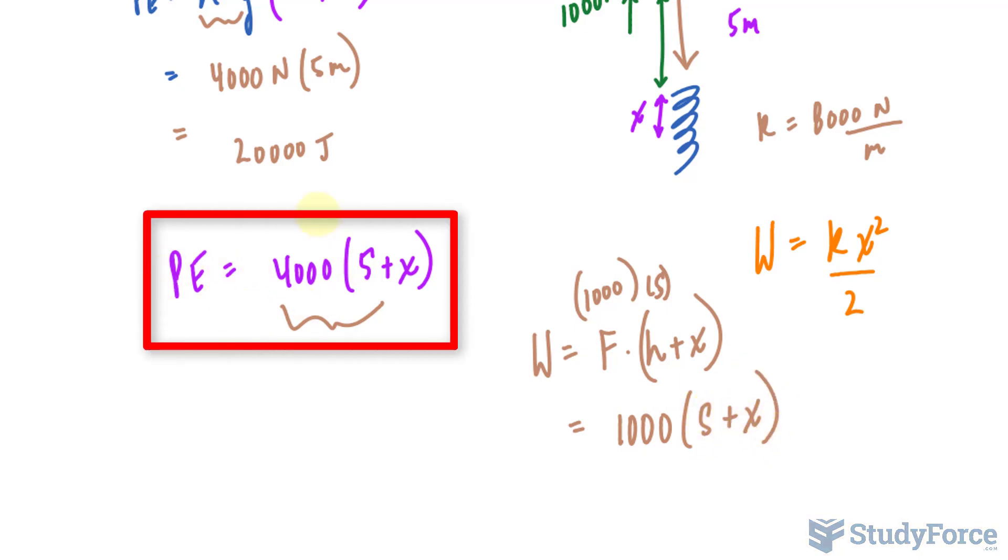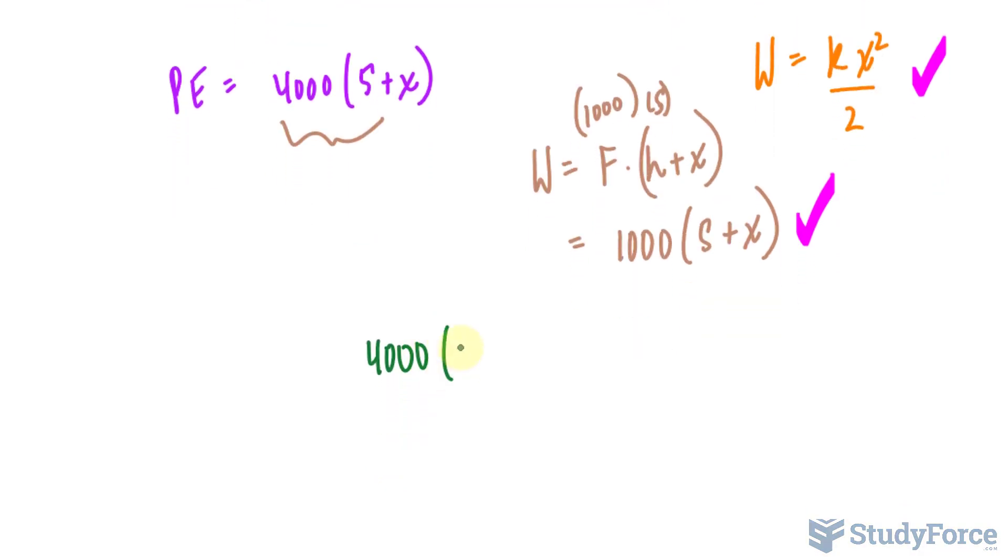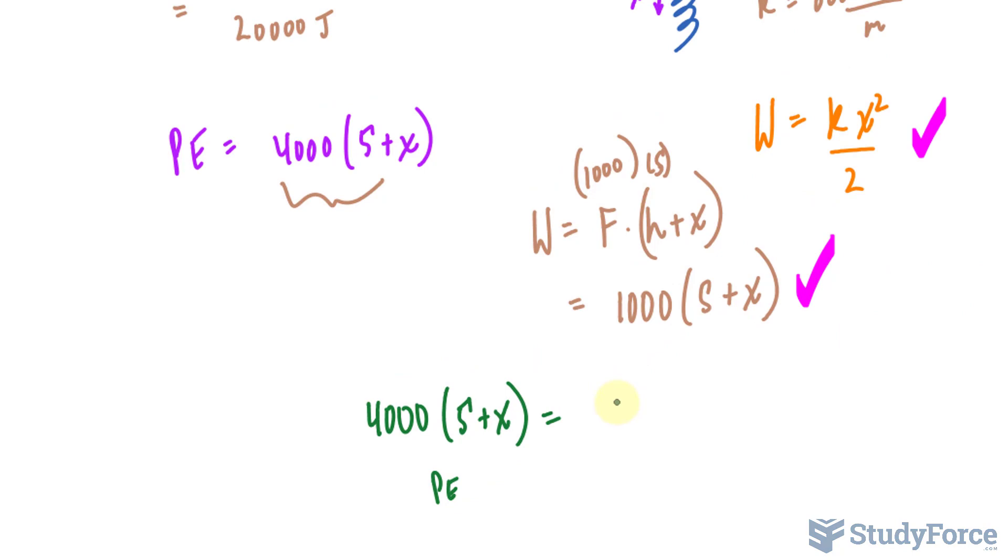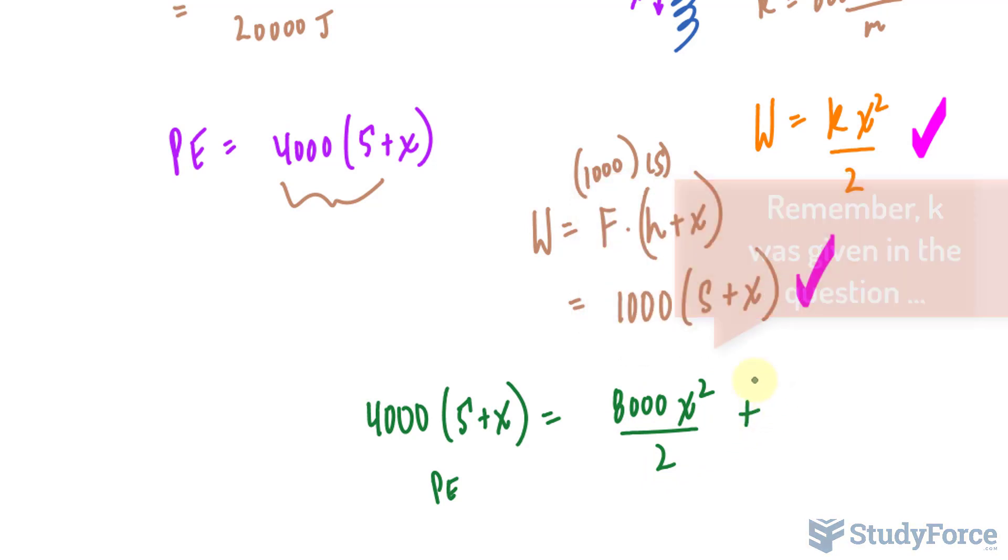This potential energy will go into this and that. So to write that down as one big mathematical expression, I'll say 4,000(5 + x), that's the potential energy, is equal to this, which k being 8,000, 8000x²/2 plus that, 1,000(5 + x).